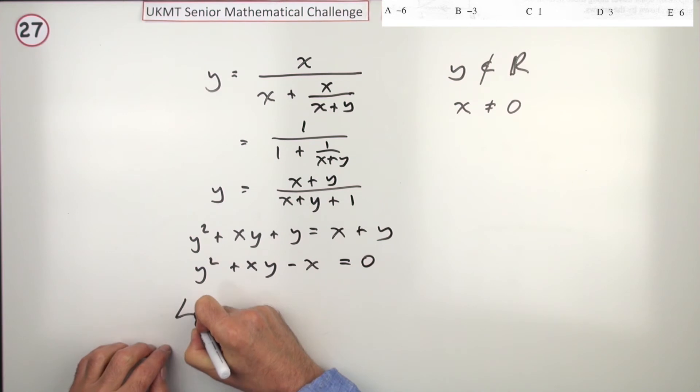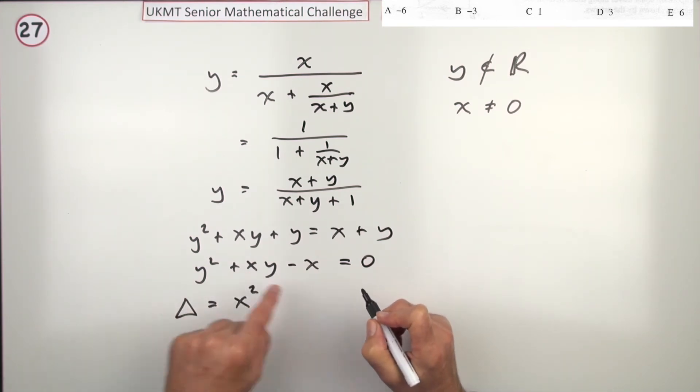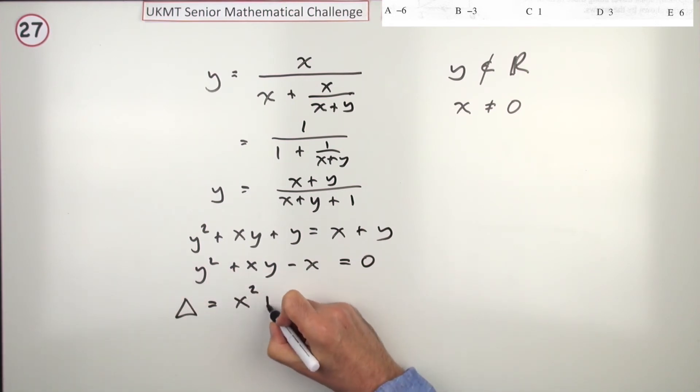Now, what's its discriminant? The discriminant will be b squared, which is x squared, minus 4ac, so I'll make it into, with a minus there, a plus 4 times x, and now you can answer it.